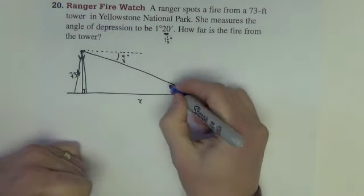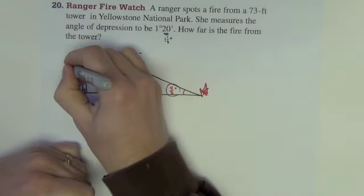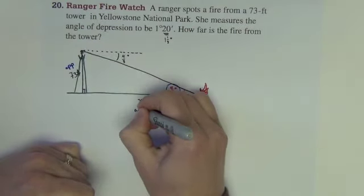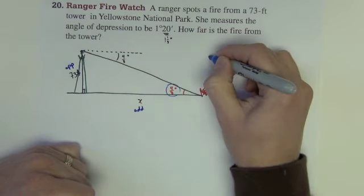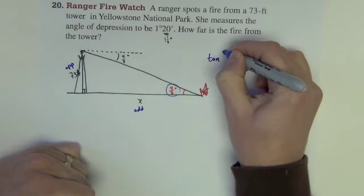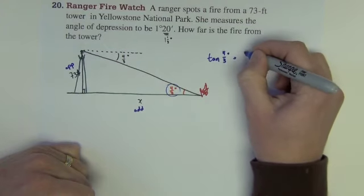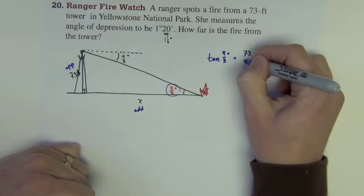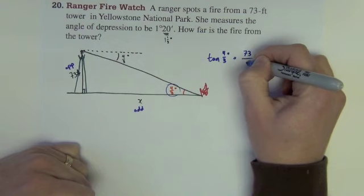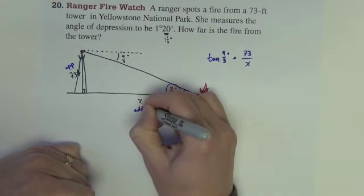So setting it up down here. This is the opposite. This is the adjacent. So I would say tangent of 4 thirds of a degree is equal to the opposite 73 divided by the adjacent x.